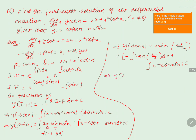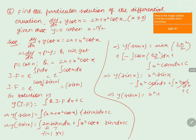We write y·sin(x) = x²·sin(x) - ∫x²·cos(x) dx + ∫x²·cos(x) dx + c. The ∫x²·cos(x) dx terms cancel, giving y·sin(x) = x²·sin(x) + c.